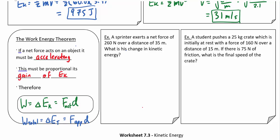Let's do another example. A sprinter exerts a net force of 260 newtons over a distance of 35 meters. What is the change in kinetic energy? Change in Ek is just going to equal F net times D. So 260 newtons times 35 gives us about 9,100 joules of kinetic energy.